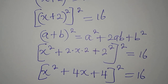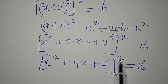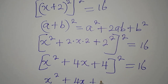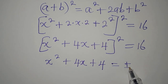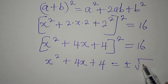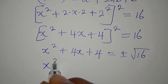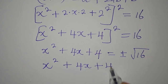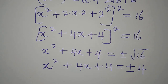Now I'm going to take the square root of both sides to remove the outer square. So x² + 4x + 4 remains on the left-hand side, and on the right-hand side we have plus or minus the square root of 16, which gives us plus or minus 4.